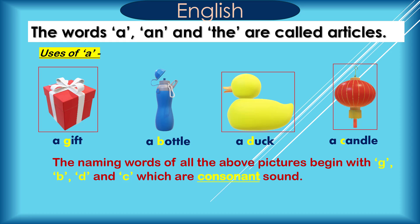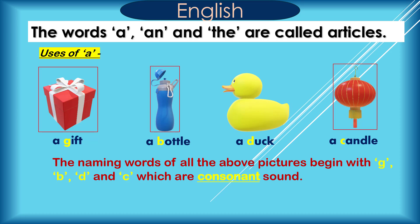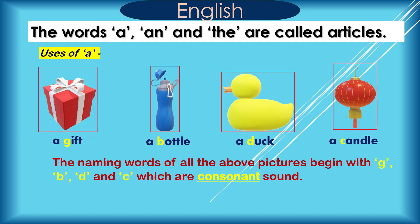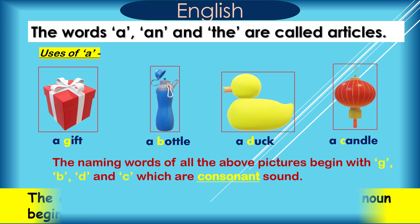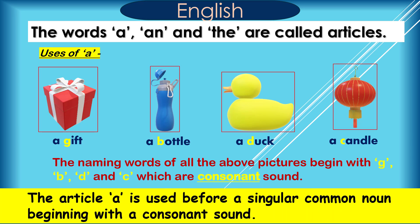Uses of A: A gift, a bottle, a duck, a candle. The naming words of all the above pictures begin with G, B, D, and C, which are consonant sounds. The article A is used before a singular common noun beginning with a consonant sound.